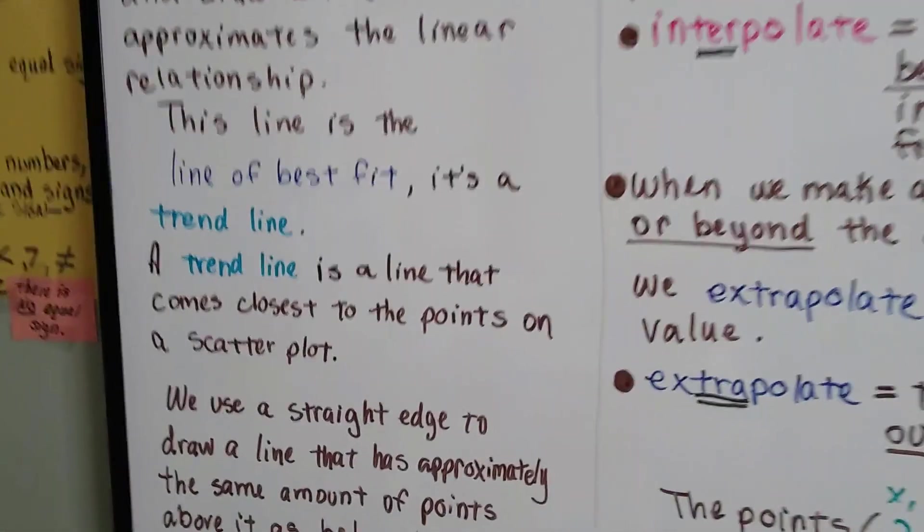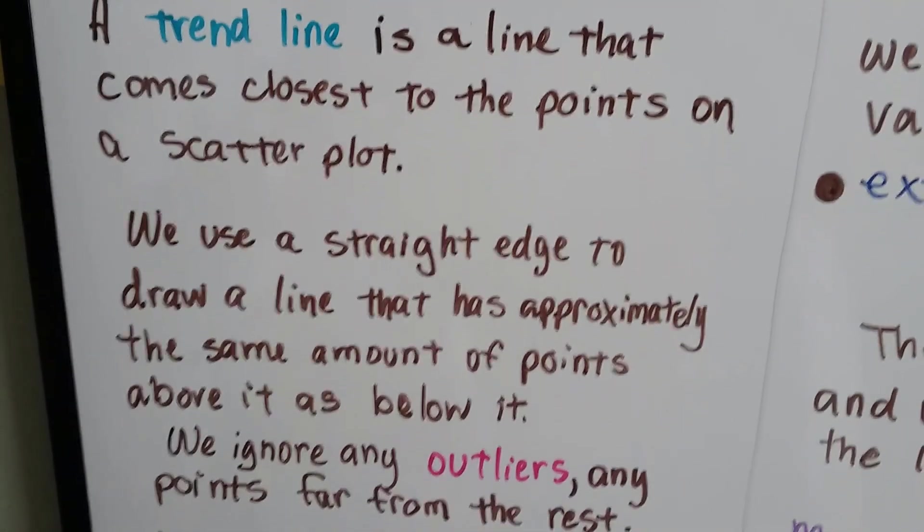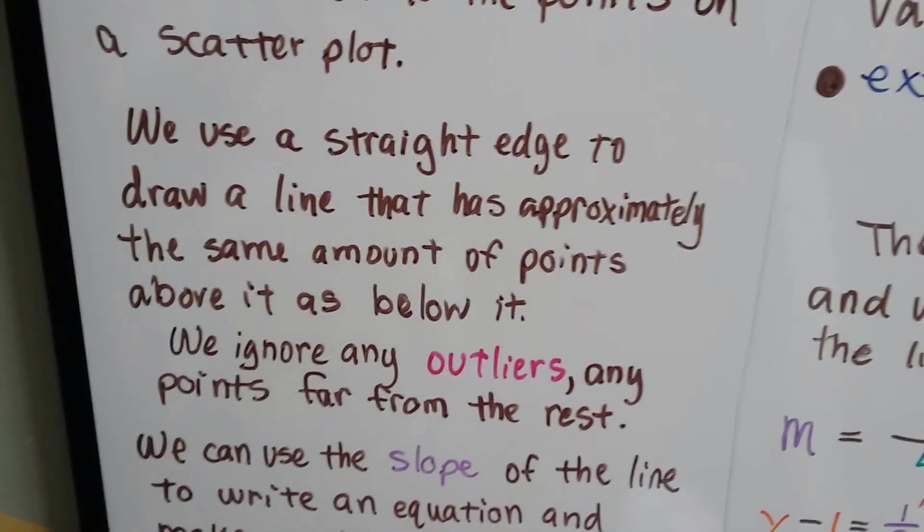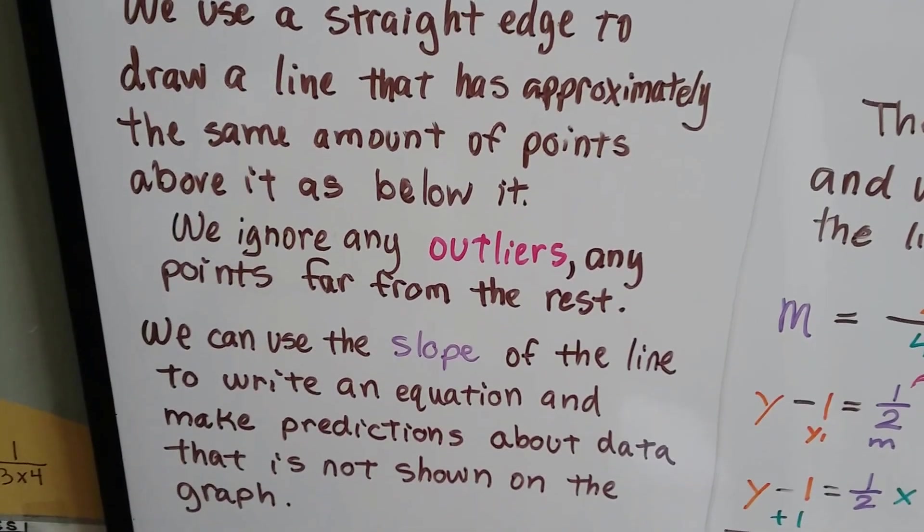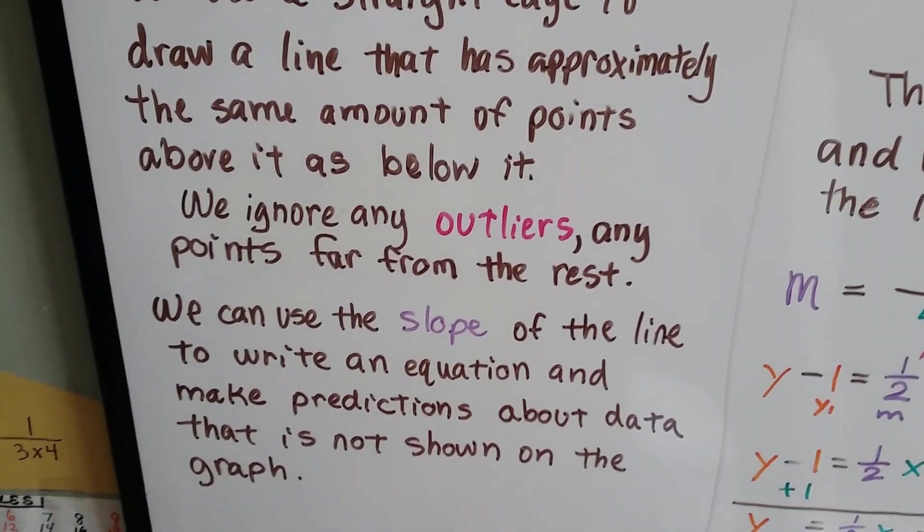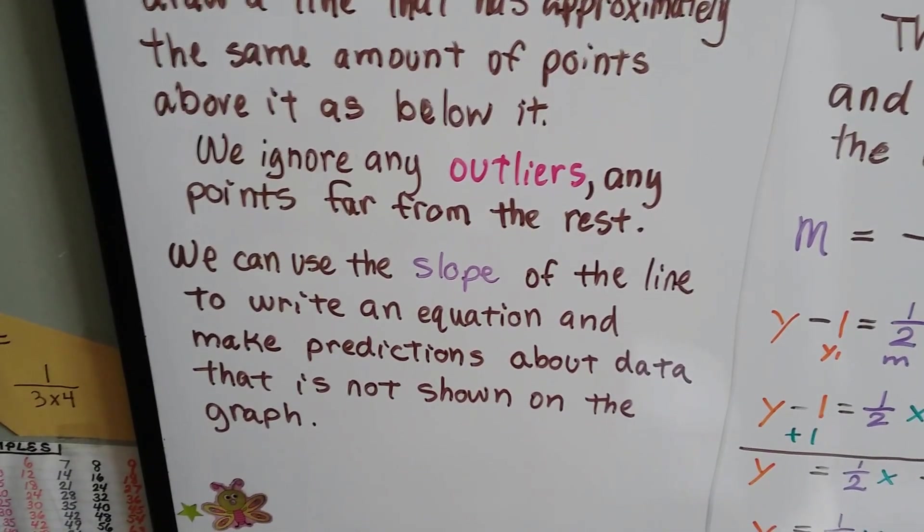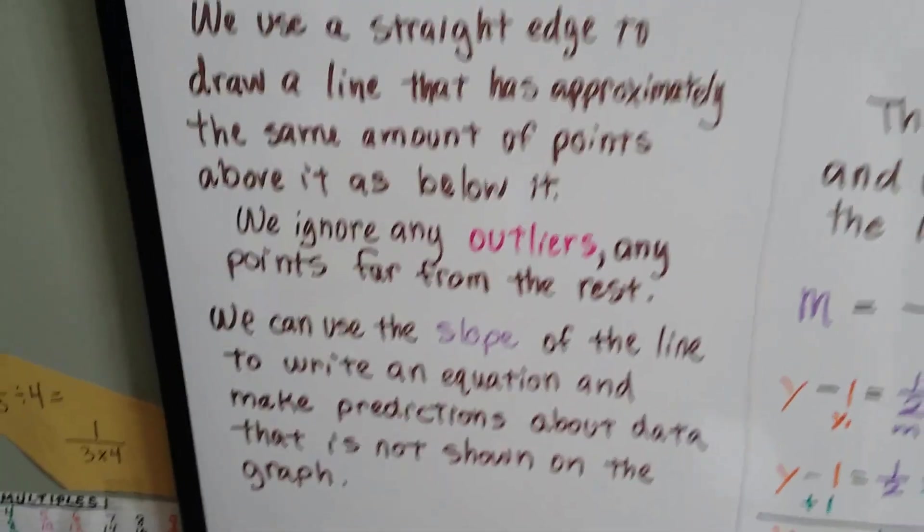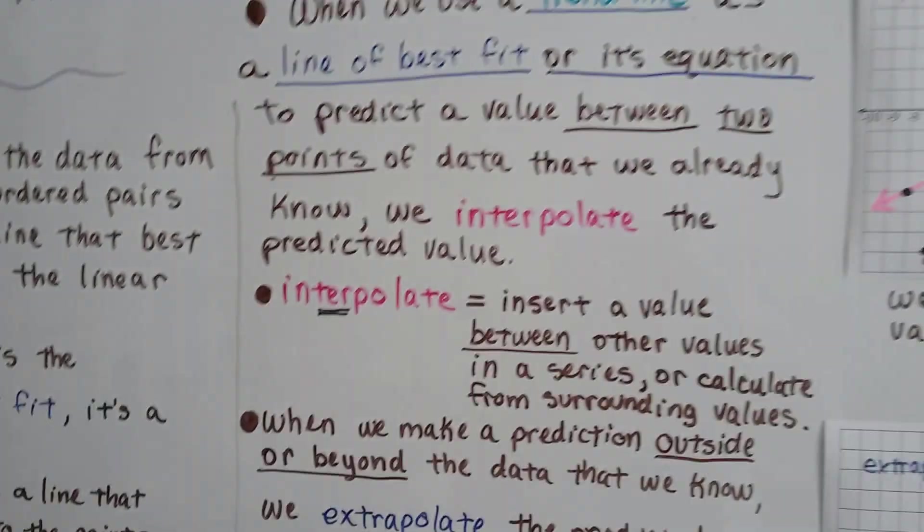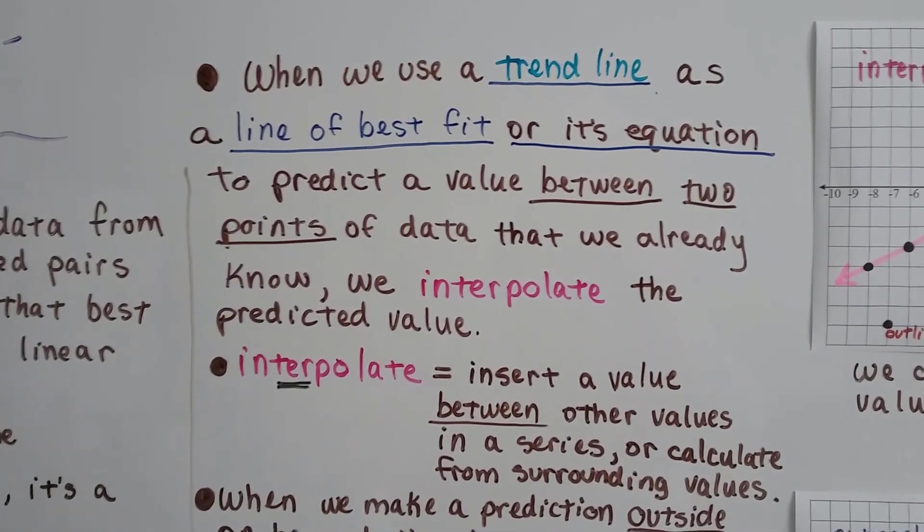And a trend line is a line that comes closest to the points on the scatter plot. We use a straight edge to draw a line that is approximately the same amount of points above it as below it. We ignore any outliers, any points that are far from the rest. And we can use the slope of the line to write an equation and make predictions about data that's not shown on that graph.